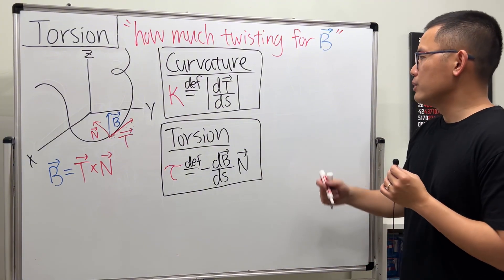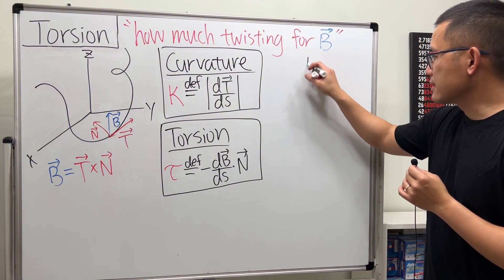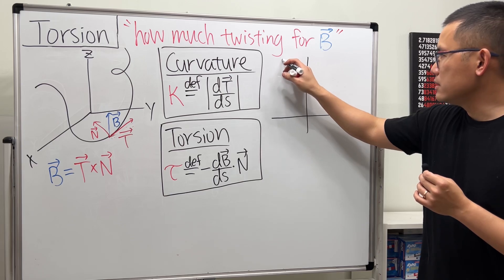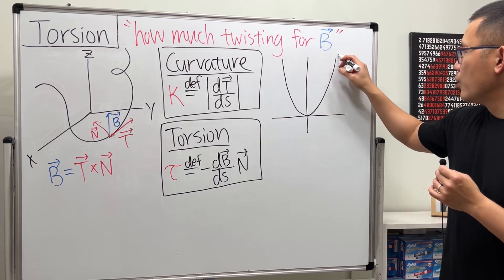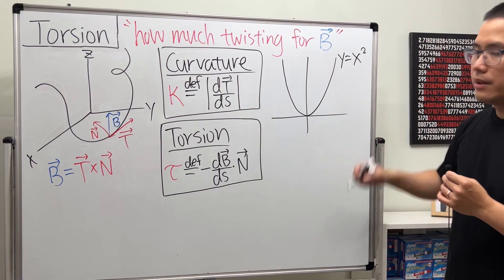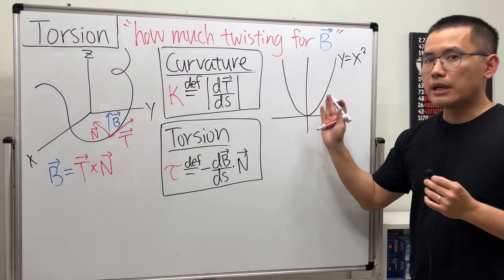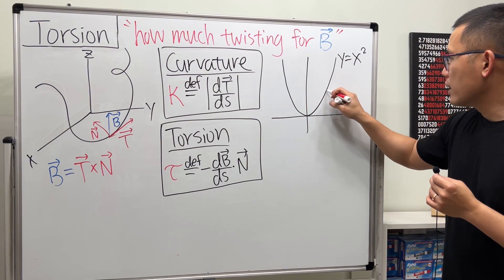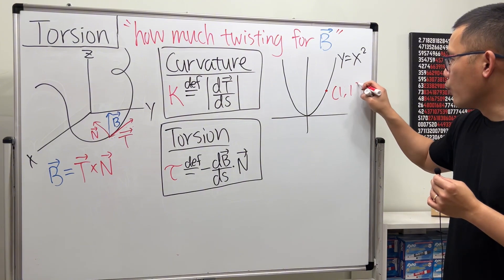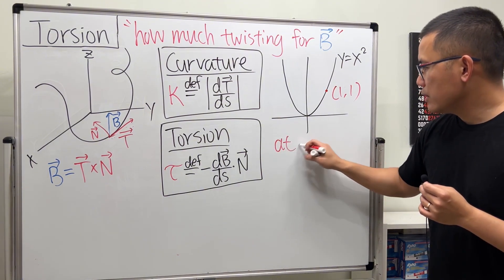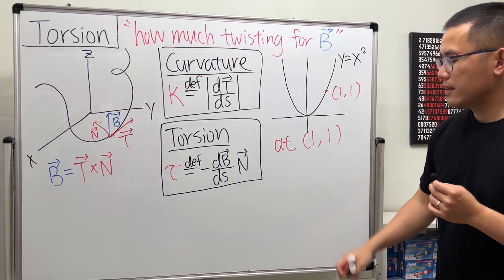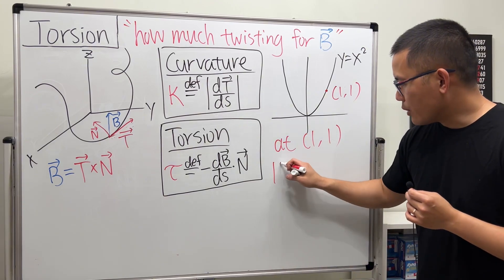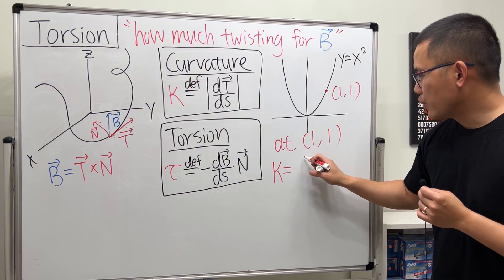And let me just give you a quick comparison. I'm going to use the example that we did last time, which is, let's consider y = x². And notice this is just a plane curve. And last time we considered the point (1, 1).